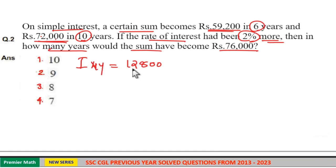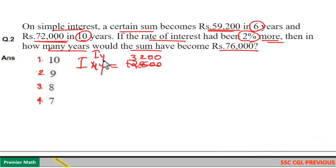Then interest received in 1 year: 4 goes 3 times in 12, 4 goes 2 times in 8. So interest received in 1 year equals Rs. 3,200.